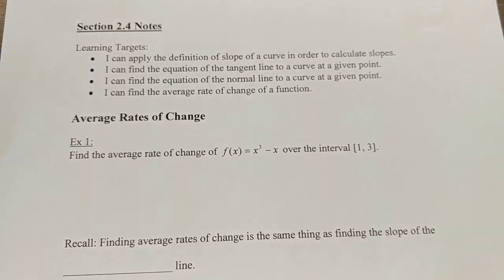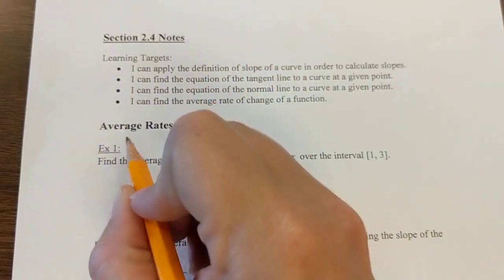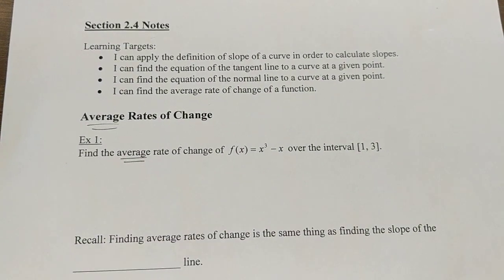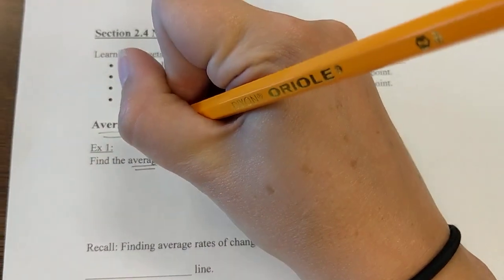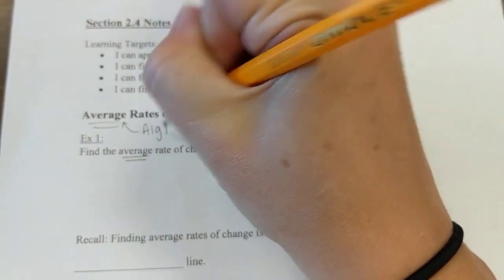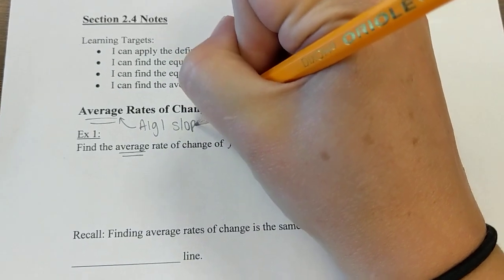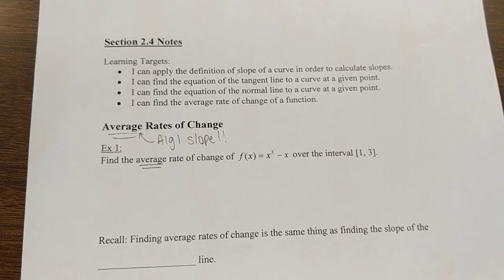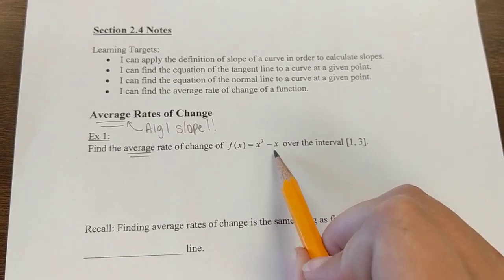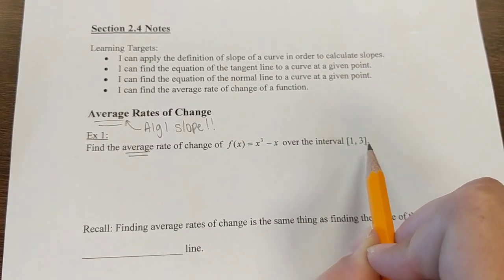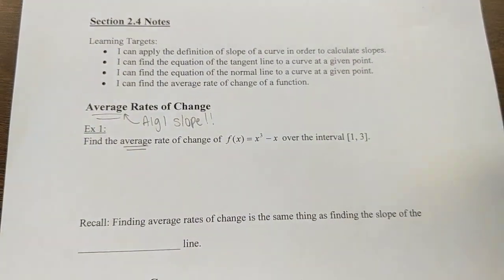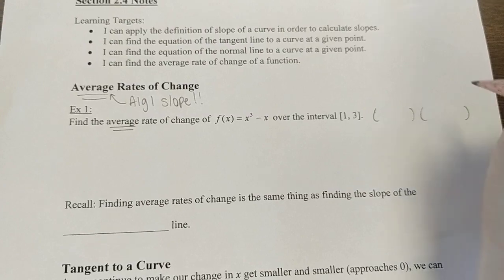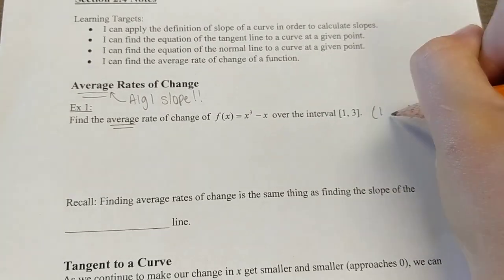First, we start with average rates of change. Any time you see this phrase, average rate of change, I want you to think this is algebra 1 slope. It's something you've been doing all the way back since algebra 1. When we find the average rate of change of this function over the interval from 1 to 3, it means we need two ordered pairs. That's the first thing I would do, figure out what my two ordered pairs are.